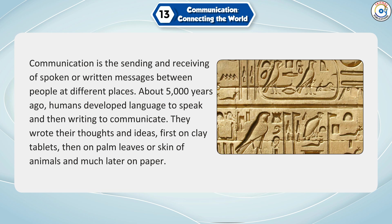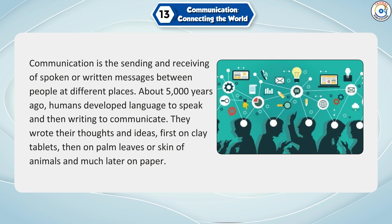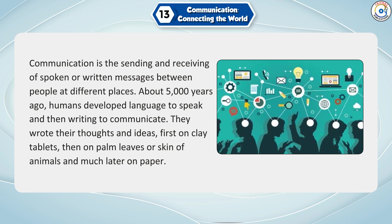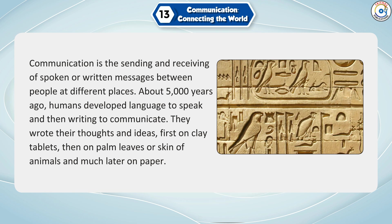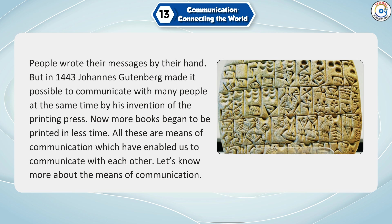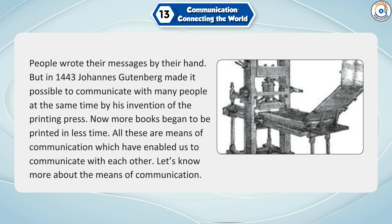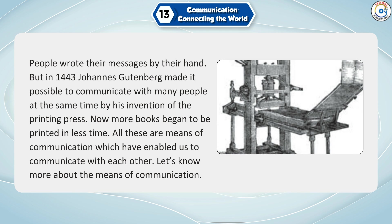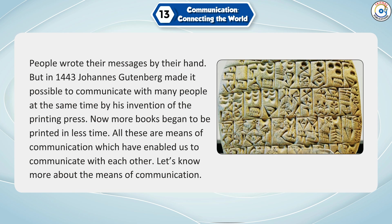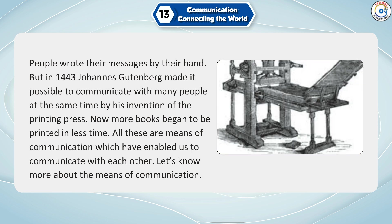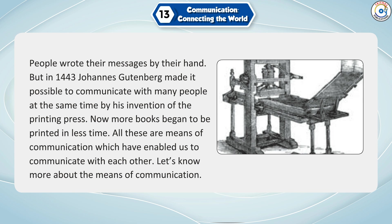About 5,000 years ago, humans developed language to speak and then writing to communicate. They wrote their thoughts and ideas first on clay tablets, then on palm leaves or skin of animals, and much later on paper. People wrote their messages by hand. But in 1443, Johannes Gutenberg made it possible to communicate with many people at the same time by his invention of the printing press. Now, more books began to be printed in less time.